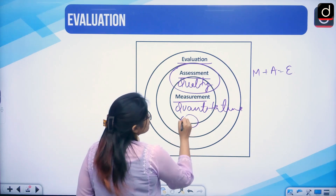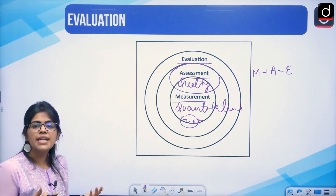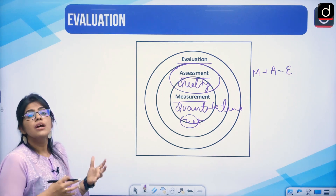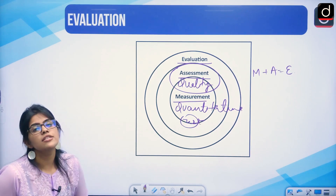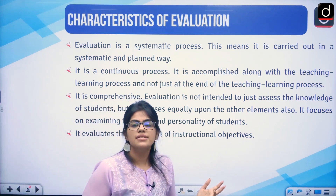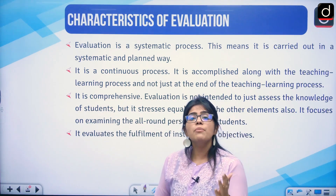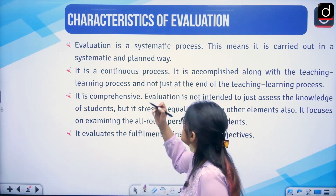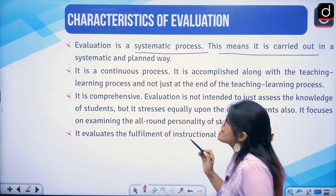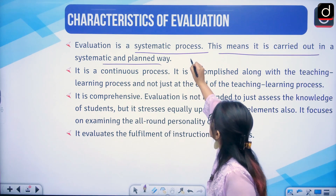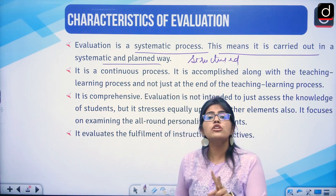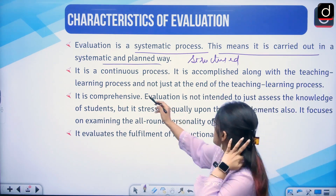Measurements can be done using different types of tests — placement tests, aptitude tests, and class tests. This leads the teacher to a conclusion, which is called evaluation. Evaluation is a systematic process. Just as teaching is an art and science, it is a systematic social process carried out in the most planned and structured manner.